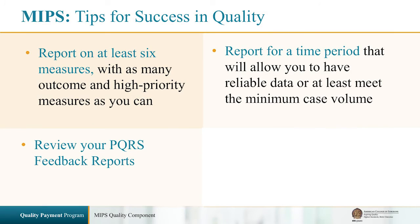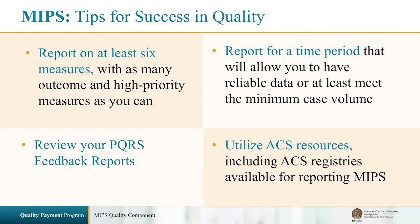In general, reporting for a longer period of time will allow you to track and improve your performance on the measure, and will likely increase measure validity and reliability. Review your PQRS feedback reports. Understanding your PQRS measure reporting and past performance rates will help you determine the best strategy for MIPS in order to optimize your score. Utilize ACS resources, including ACS registries available for reporting MIPS. ACS is working to further align our registries with the MIPS program, so please continue to visit the ACS Quality Payment Program website for updates.